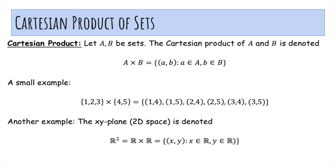Another example, the XY plane, 2D space is denoted R², which is R × R, which is just every pair of real numbers (x,y). If A and B are finite sets, then the size of A × B is the size of A times the size of B by the product rule of counting.